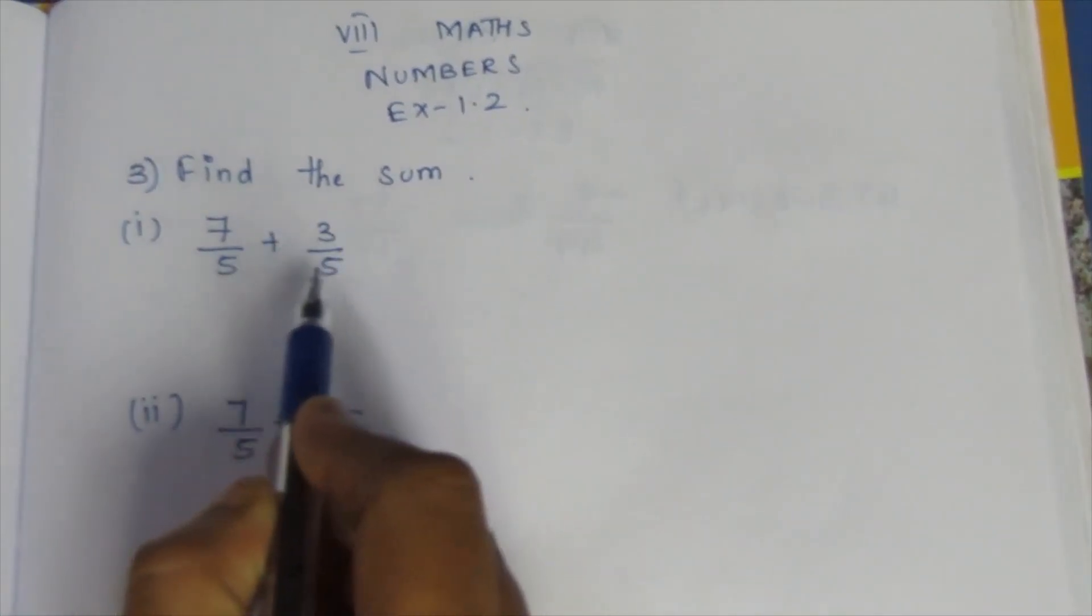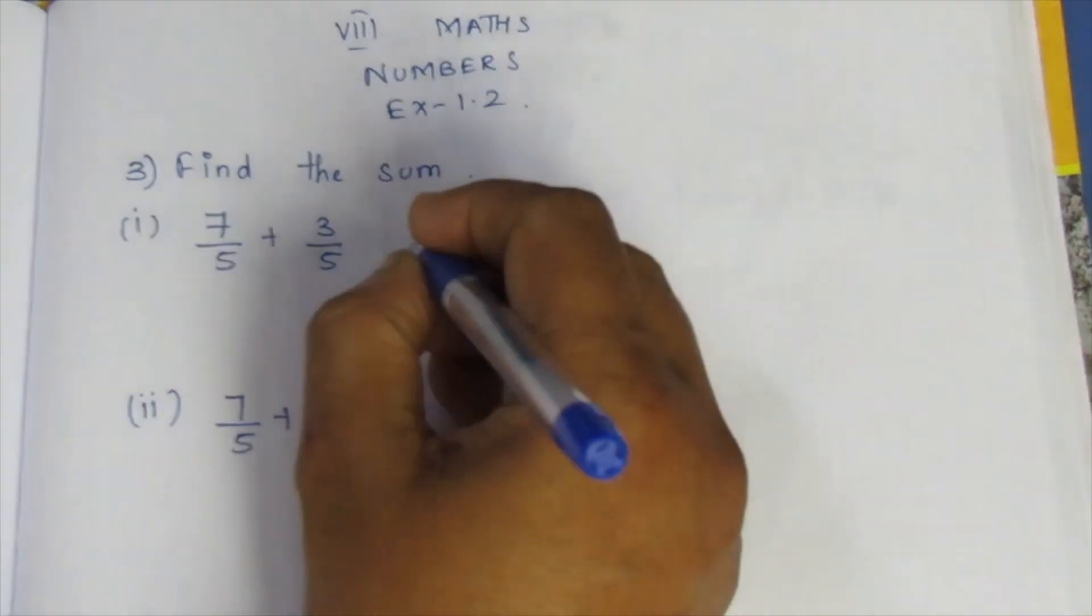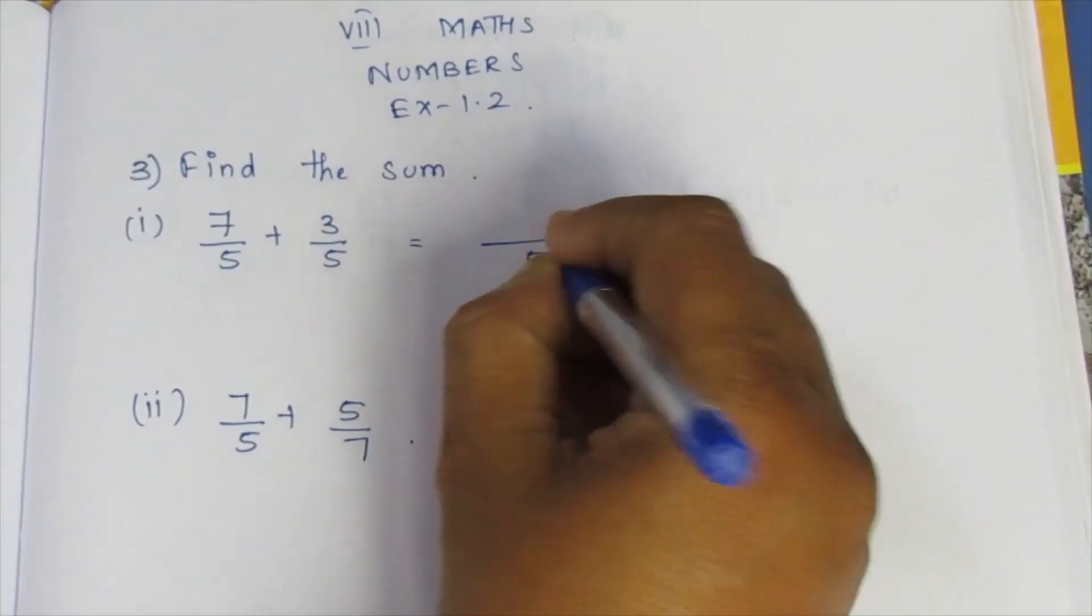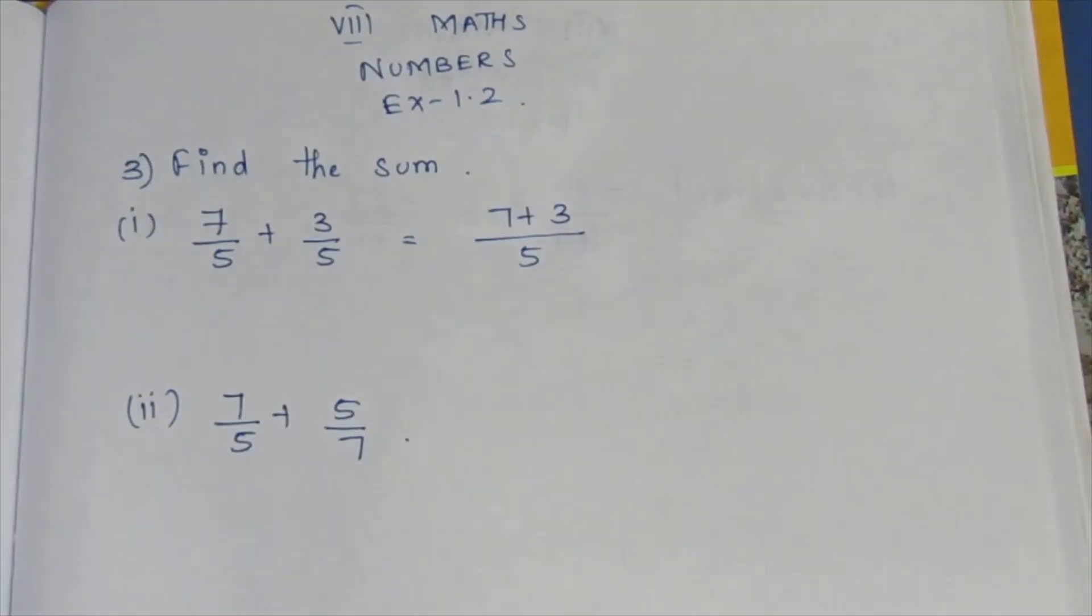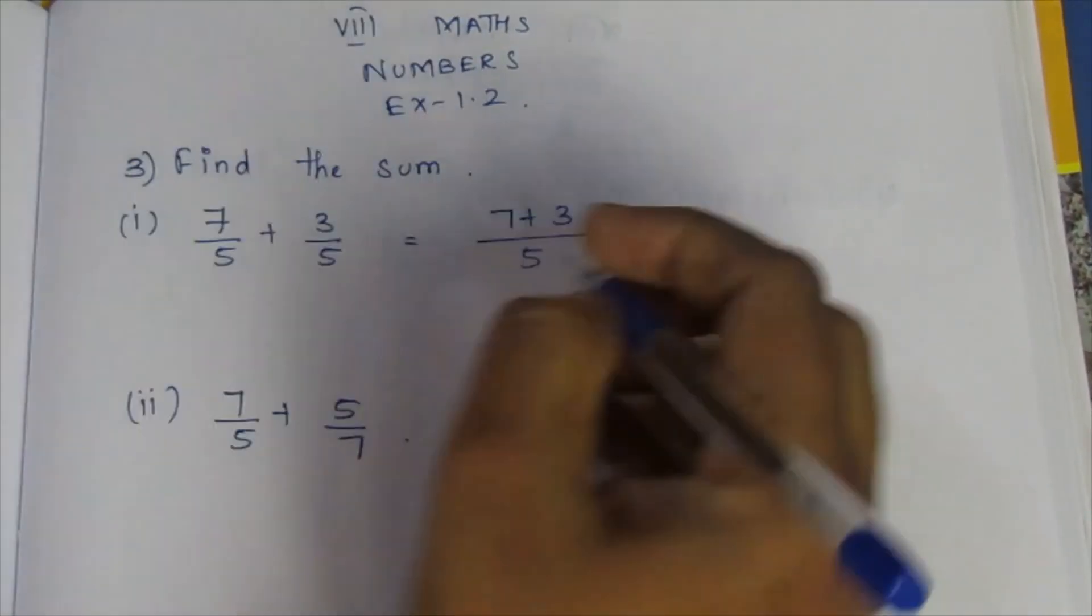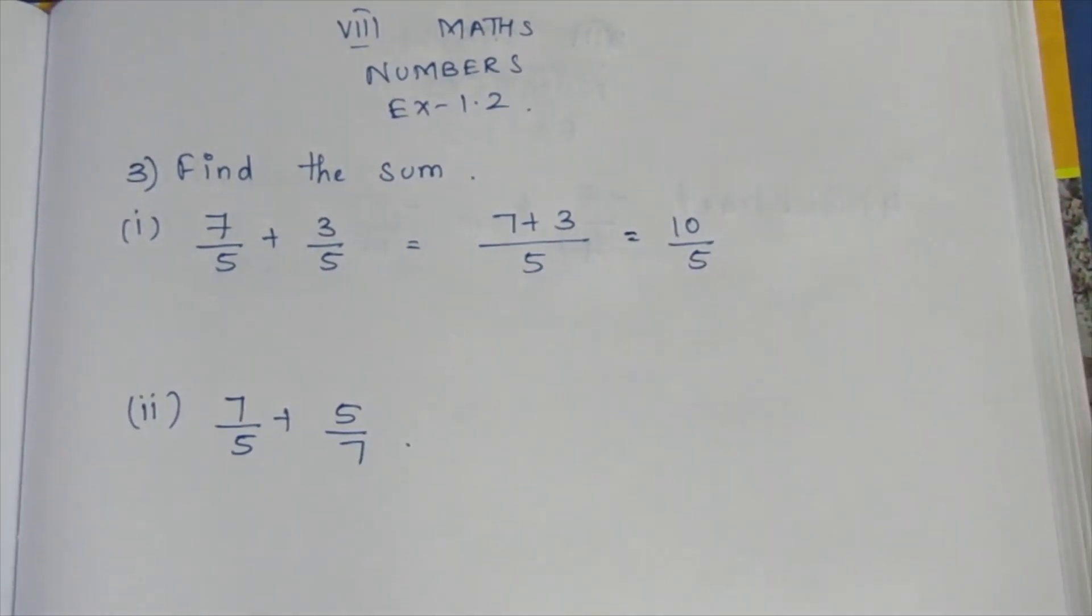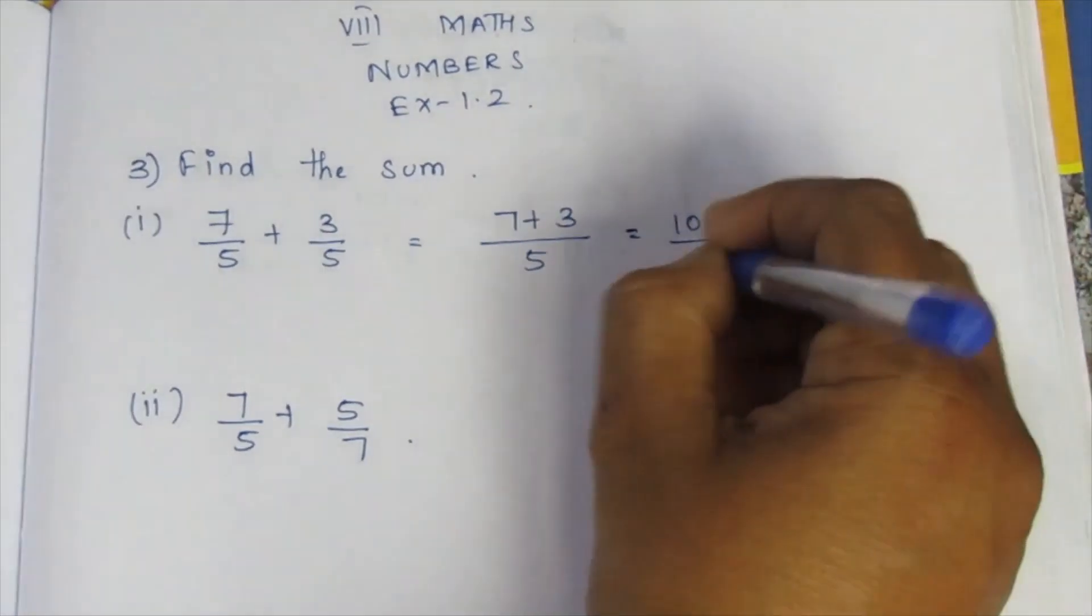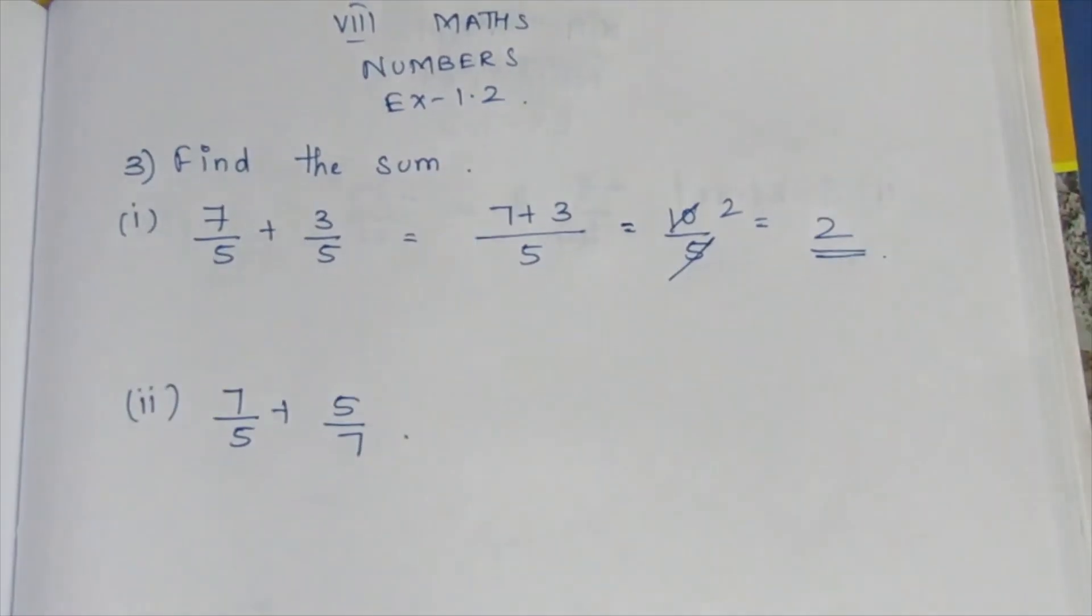Now let's look at the same condition. The rational number is the same condition. Denominator is the same condition. Let's look at the numerator. If we add this, 7 plus 3 is 10 by 5. If we cancel the table, 5 into 2 is 10. The first sum is 2.